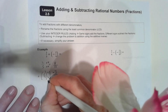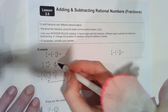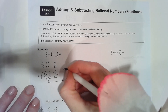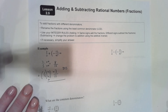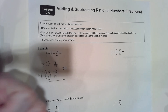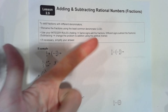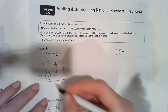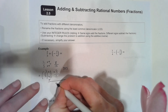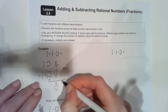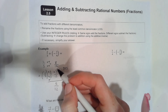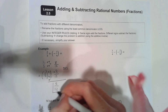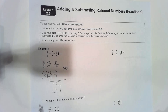Now I add these together. They have different signs, so different signs means subtract. In my head I count: eight, then backwards — seven, six, five. My final answer is five-twelfths, and it will be positive because eight has a larger value than three. Five-twelfths, final answer. Not too bad — a couple of steps, but not too bad.